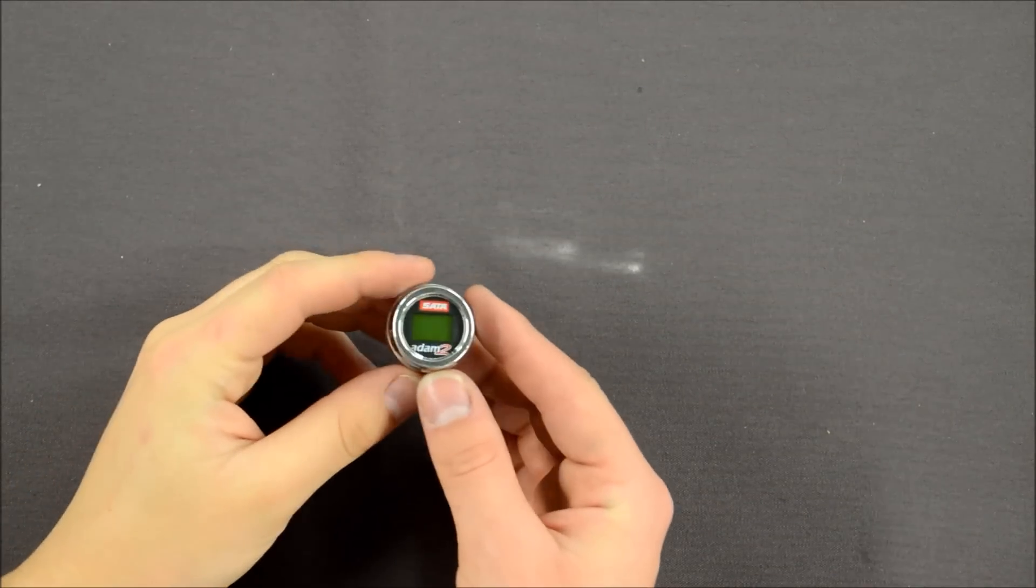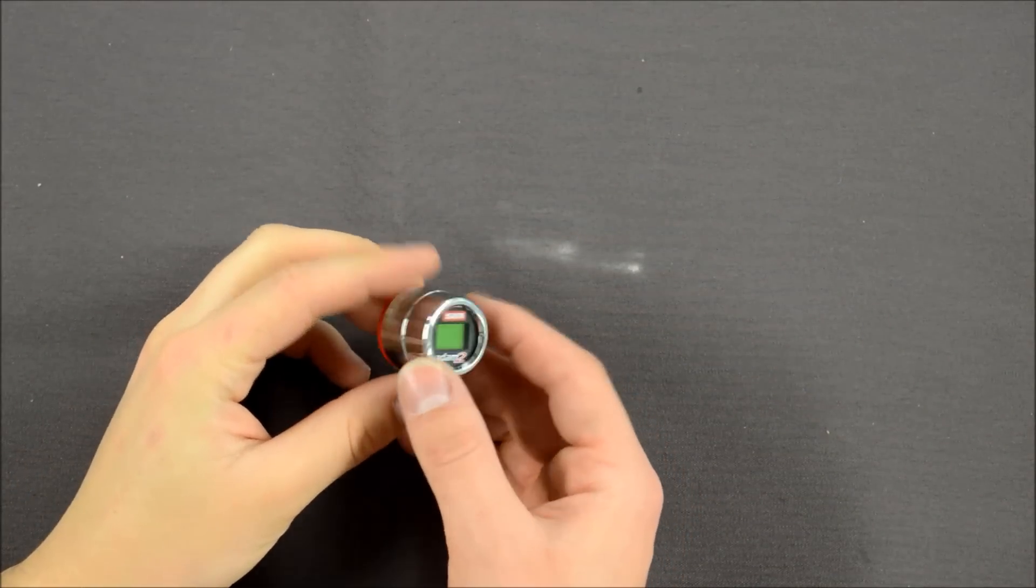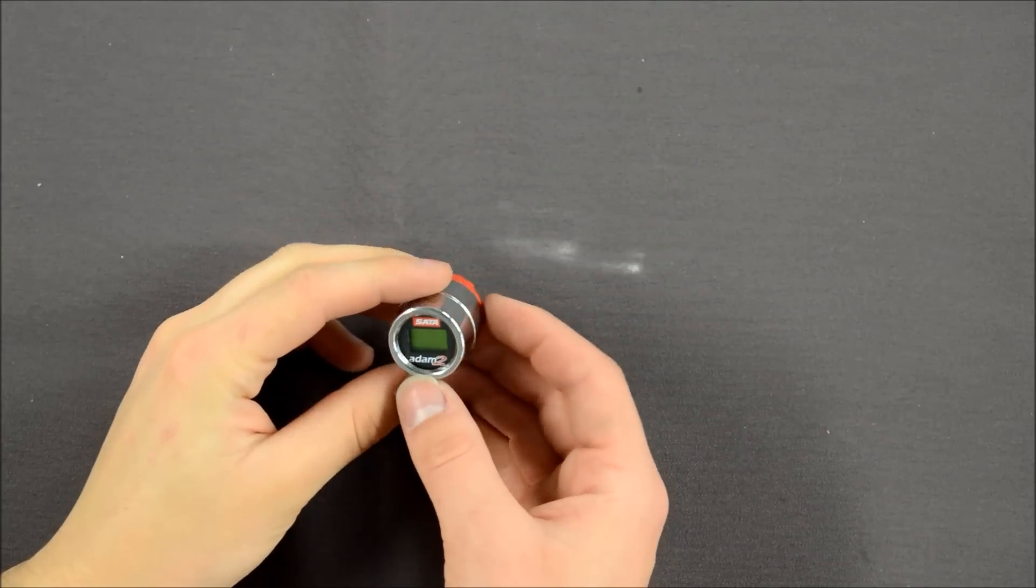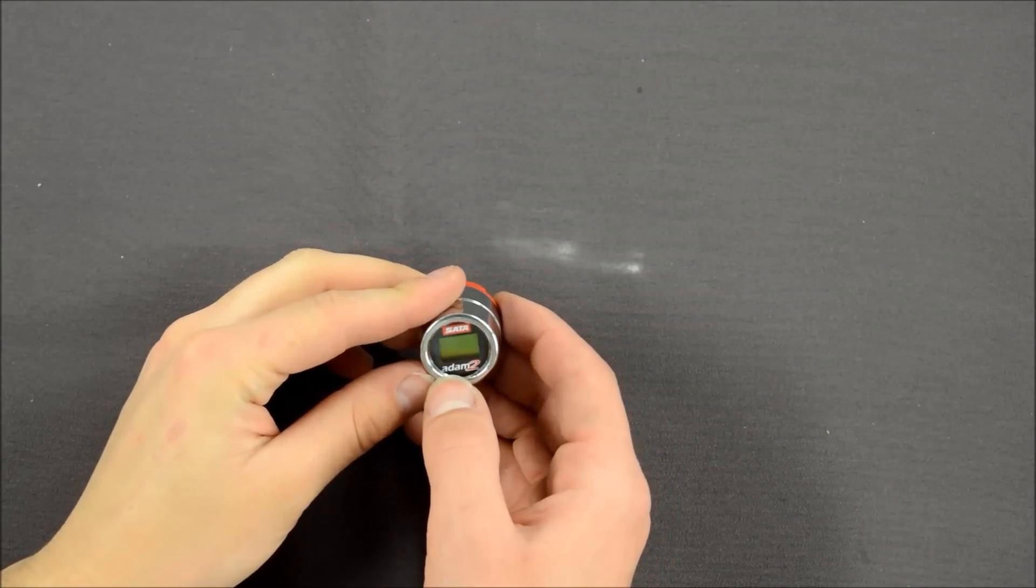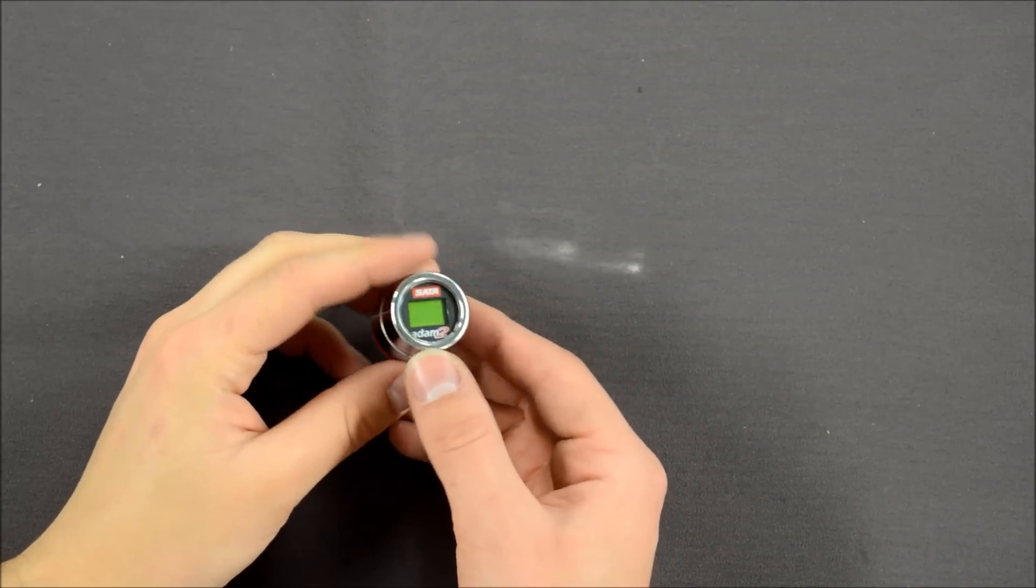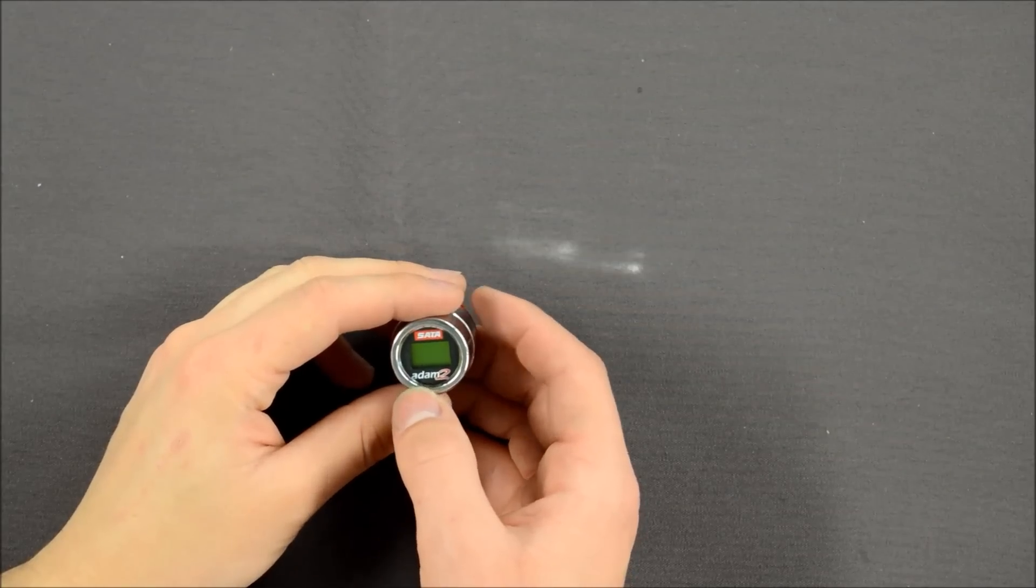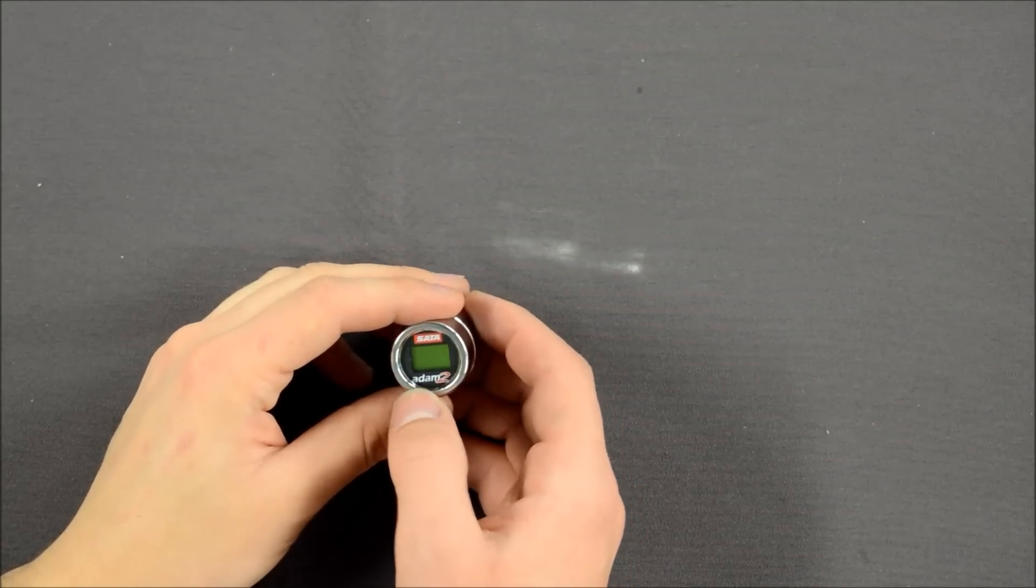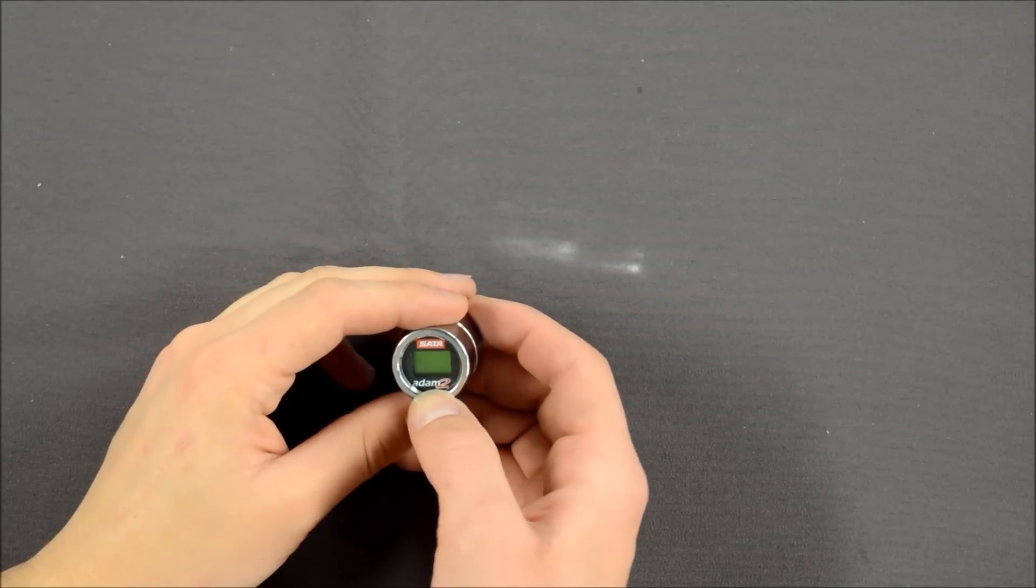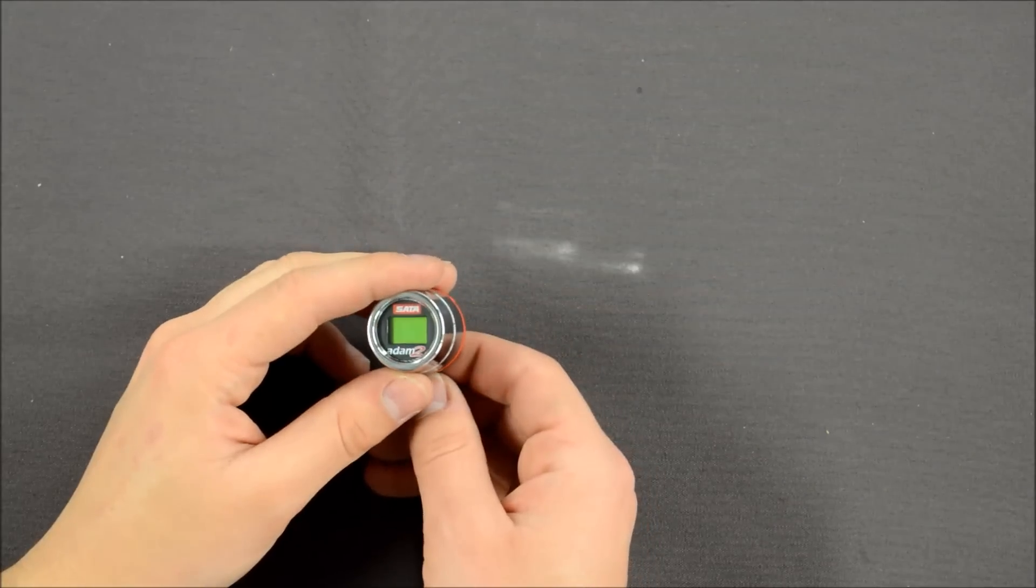So some of you are probably wondering what does the SATA ADAM actually stand for. Well ADAM actually stands for additional digital air micrometer. And the ADAM2U is the additional digital air micrometer to U and the U being universal.